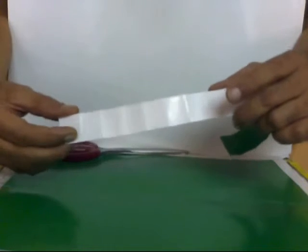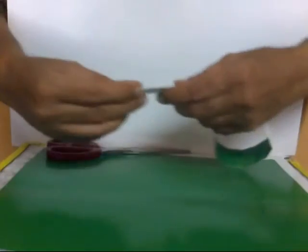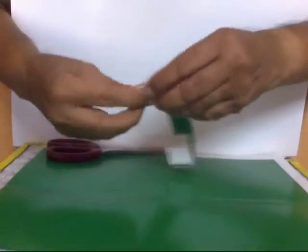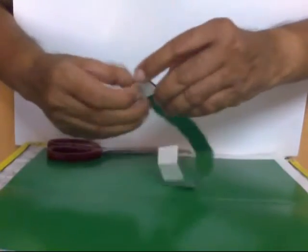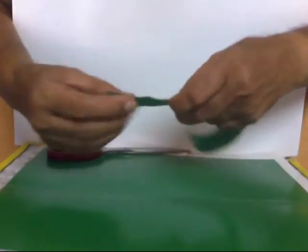All that you need is just a strip of paper and a pair of scissors. Now we will take a strip of paper and fold it into 16 parts to find the square root of 16. So we have 16 parts here.